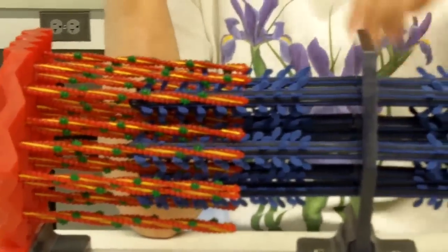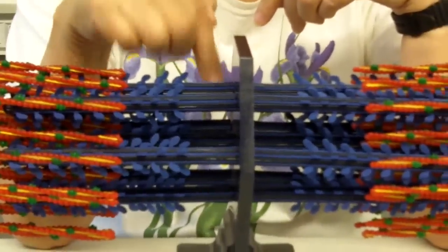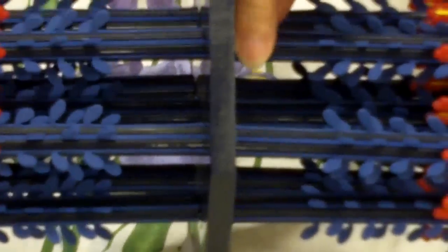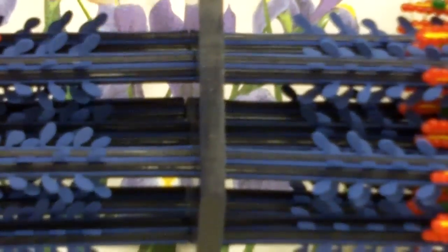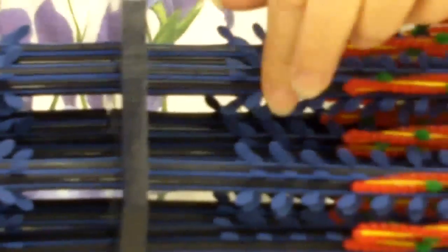Now, in the middle, we have the M-line. It connects together all the thick filaments. The thick filament is shown in blue here. It's mainly made up of 300 molecules, each one of myosin. And you see these little projecting things here.